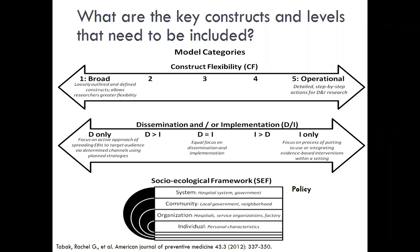A few other categories that can be helpful in sorting through the models are how flexible the model's constructs are, how focused the model is on dissemination, implementation, or both, and the social ecological levels incorporated. Models with broad construct flexibility contain relatively loosely outlined or defined constructs, which gives researchers greater flexibility in applying the model across diverse D&I activities and contexts. Because of the greater flexibility, researchers have more responsibility when it comes to thinking through how to operationalize, implement, and use the model. Operational models provide detailed step-by-step actions for completion of D&I research processes, making these models more clearly defined for a particular context and activity. Models in between these two extremes contain constructs that are more detailed than broad models, but not as detailed as operational models, making them less flexible across all contexts but more helpful in visualizing the role of the model in your study.